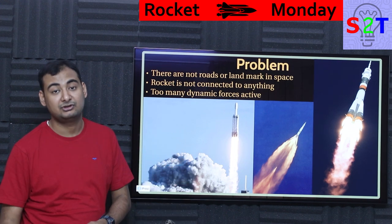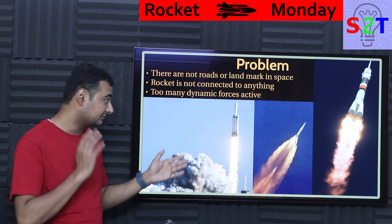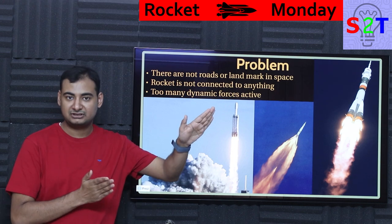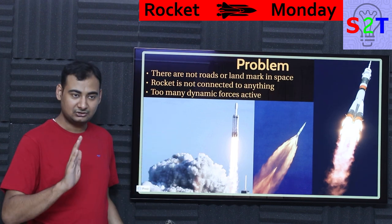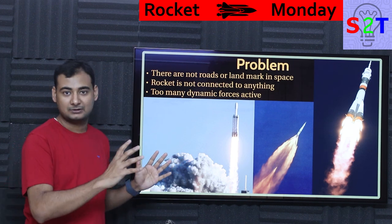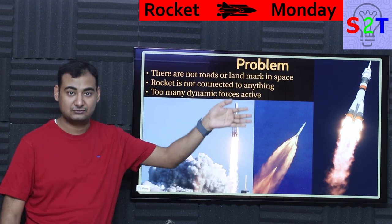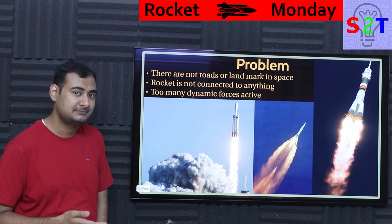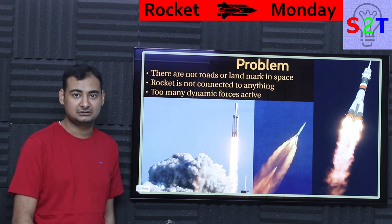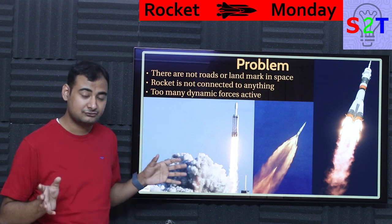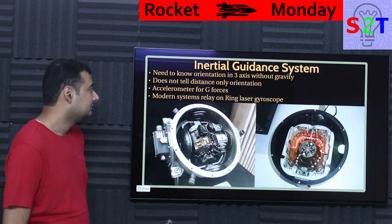Aircraft have a similar issue but have the luxury of being connected to the atmosphere, utilizing wind speed to calculate roughly where they are. Without atmosphere to guide you, you are completely alone. On top of that, the dynamic forces at play for a rocket are far more convoluted than for a plane. A plane has a simple launch profile: take off, cruise, land. A rocket has to go as fast as possible, slow down for max-Q, boost back up, do course corrections, detach the second stage, and throttle the engine to protect the payload — as you can see called out on SpaceX livestreams.